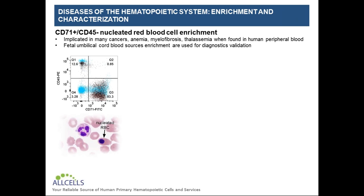Nucleated red blood cells, which are CD71-positive and CD45-negative blood cells, are actually only present in fetal tissues such as umbilical cord blood, but are often diagnostic of hematological disease states in adults if found in adult peripheral blood. In order to test new diagnostics for this type of malignancy, an enriched population of nucleated red blood cells is needed by various pharmaceutical companies involved in this type of research. The different colors shown here are overlays in the nucleated red blood cell bivariate dot plot, showing the pre- and post-enrichment via flow cytometry.